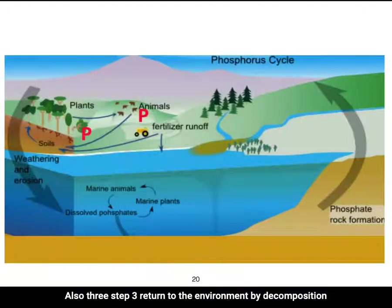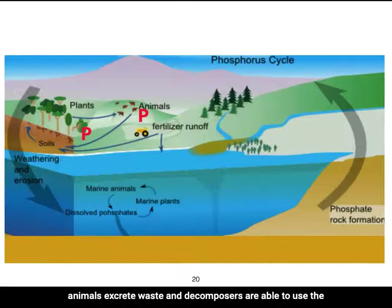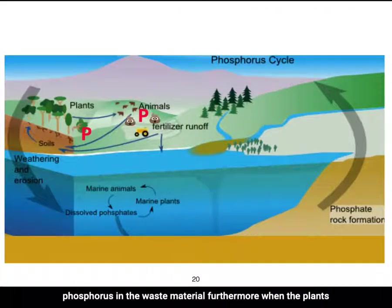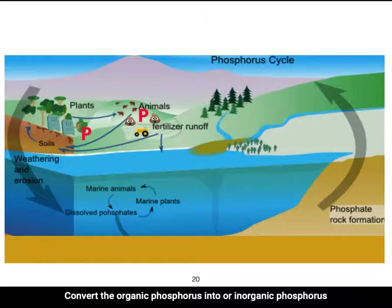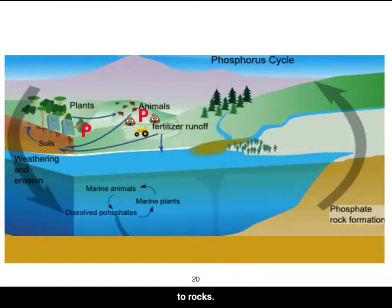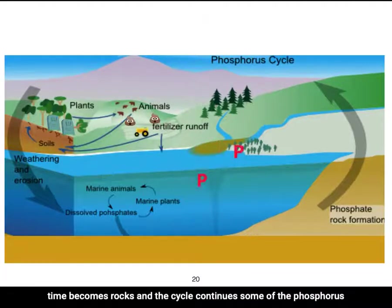Step 3 — Return to the environment by decomposition: Animals excrete waste, and decomposers use the phosphorus in that waste material. When plants and animals die, bacteria convert the organic phosphorus into inorganic phosphorus in a process called mineralization. Step 4 — Sediment to rocks: Some phosphorus gets buried in sediment, which over time becomes rocks, and the cycle continues.